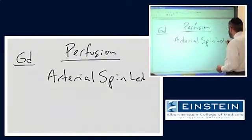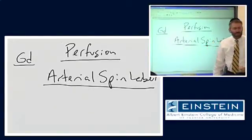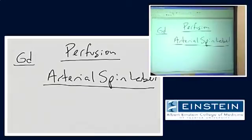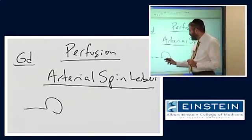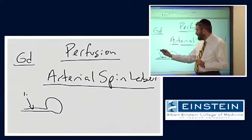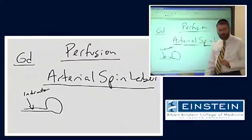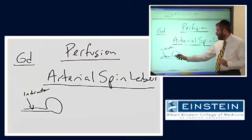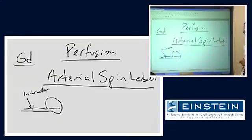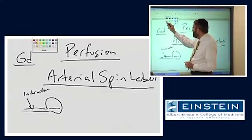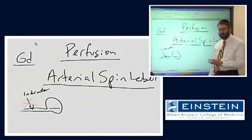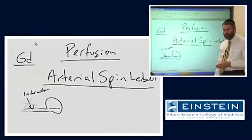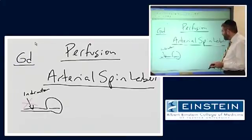And this approach is essentially very similar to the dynamic susceptibility contrast approach we talked about in that we are looking at the patient, some indicator or contrast agent, and watching it flow into the tissue that we're interested in. The difference is that in this case we do not have to inject any contrast agent. The contrast agent is the patient's own water protons in their blood, which we are going to magnetically label.